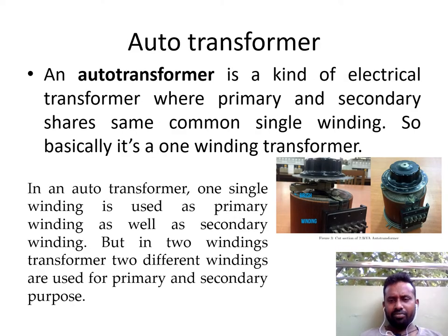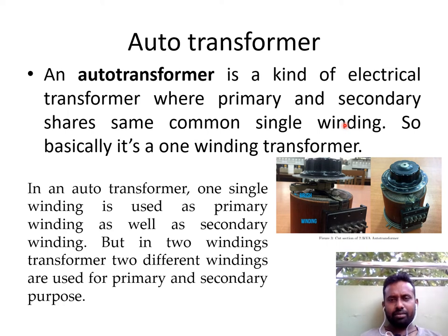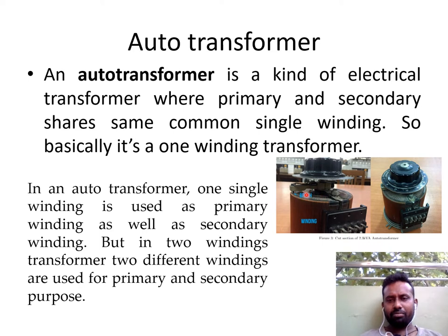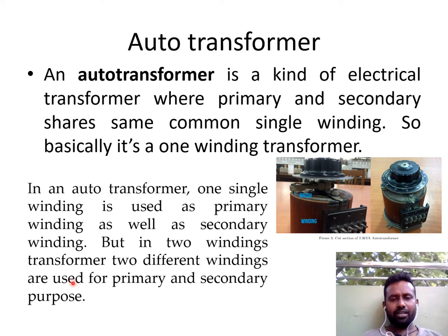Now coming to the auto-transformer. Till now we have seen what a transformer is; now we are going to see what an auto-transformer is. An auto-transformer is a kind of electrical transformer where the primary and secondary share the same common single winding, unlike the two-winding transformer. Here we have only a single winding shared by both primary and secondary. So basically it is a one-winding transformer. In a two-winding transformer, two different windings are used for primary and secondary purpose.